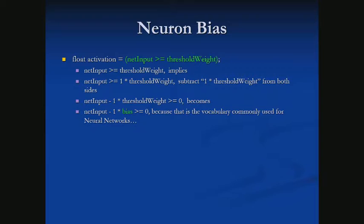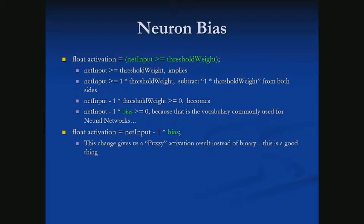It's not going to be exactly true or false anymore in a second, but that's just a vocabulary thing. So now: float activation equals net input minus one times bias. At this point, we aren't getting a binary value anymore — we'll actually get a continuous value, not even guaranteed to be between zero and one.